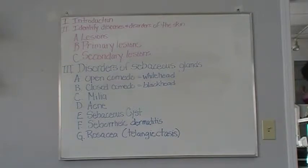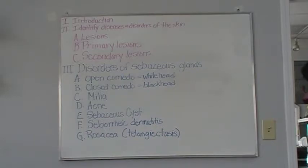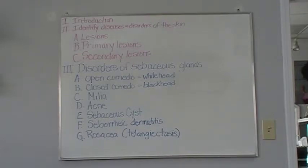A bulla is a blister containing a watery fluid, similar to a vesicle but larger. It requires medical referral. A cyst is a closed, abnormally developed sac containing fluid, pus, semi-fluid, or morbid matter above or below the skin — it also requires medical referral. A macule is a flat spot or discoloration on the skin. A nodule is a solid bump larger than four-tenths of an inch, about a centimeter, that can be easily felt. It requires a medical referral.